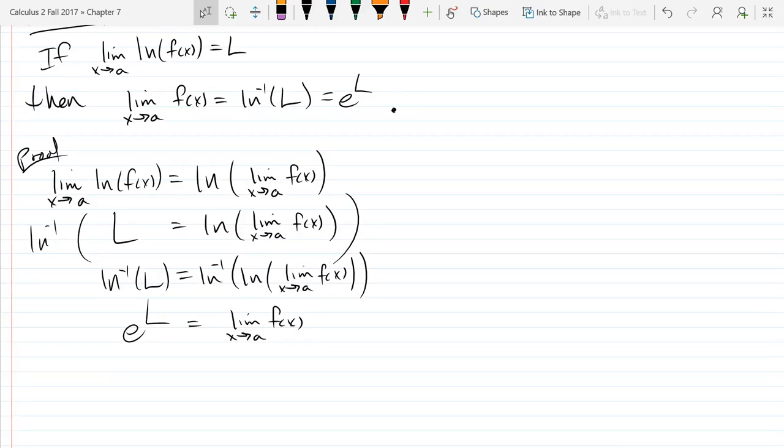So why would it be useful to take the natural log of a function? Well, what we've seen that do, we know this property, but what has been useful for us is it lets us bring exponents out as coefficients. So it lets us turn an exponential form into a product, basically.